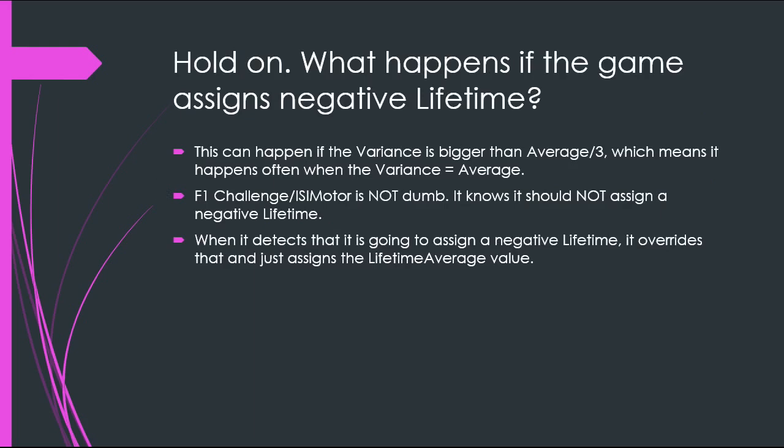But hold on — you know how people usually set the average and variance to the same value? As we know, this will generate at times a negative lifetime. How does the game handle this? ISImotor isn't stupid — it knows a negative lifetime should only occur when an engine DNFs, not at the start of a session. So when that happens, the game identifies it's trying to assign a negative lifetime and just gives you the lifetime average value from the INI instead. You never run into a negative lifetime unless the engine actually DNFs.